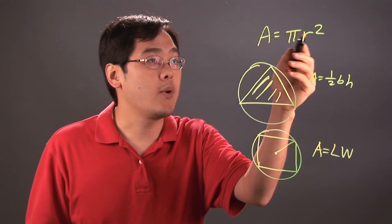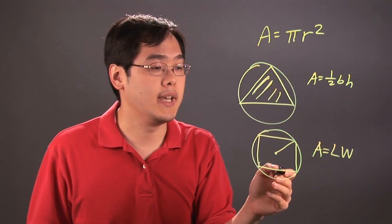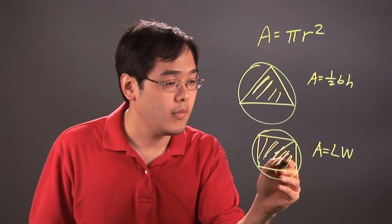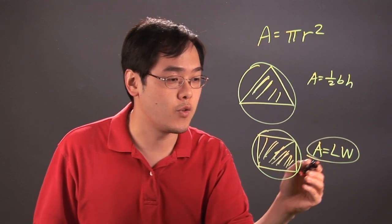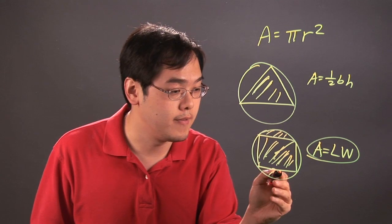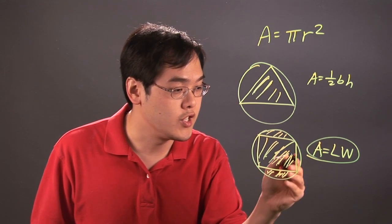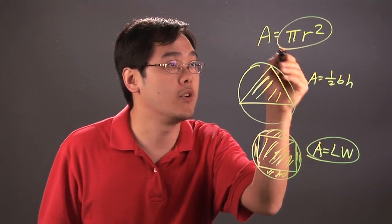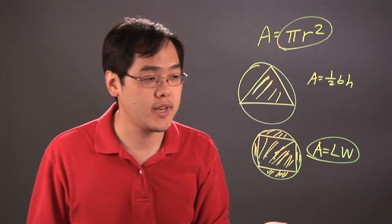Now, where the area of the circle comes into play is, sometimes if you're shading the rectangle, you can use this formula. But let's just say if you were to find the shaded region of the regions outside the circle, then you have to use the formula of the area of the circle minus the area of the rectangle.